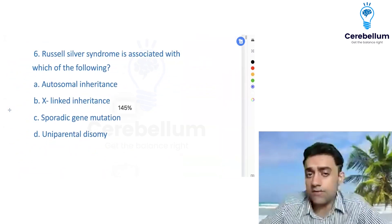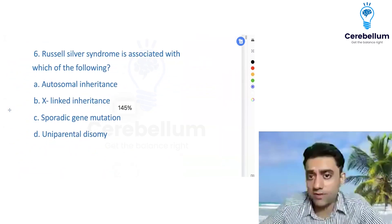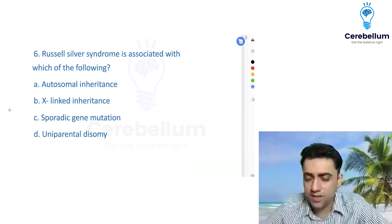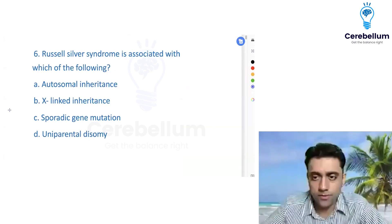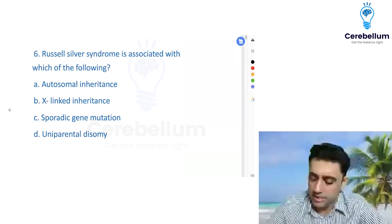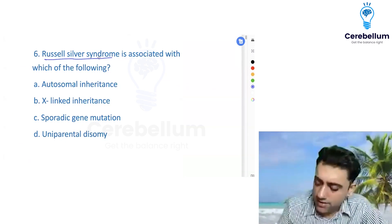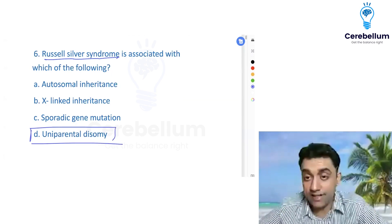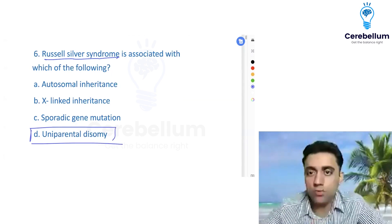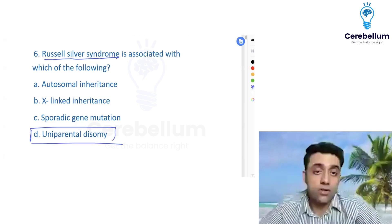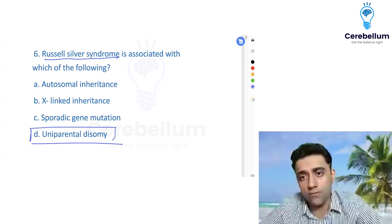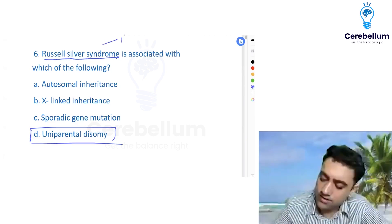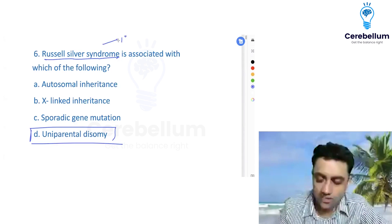Next question: Russell-Silver syndrome. Russell-Silver syndrome is associated with which of the following? These are tongue-twisting, random questions — try to answer as much as possible. Russell-Silver syndrome is an example of uniparental disomy. Normally, one gene comes from the father and one gene comes from the mother.